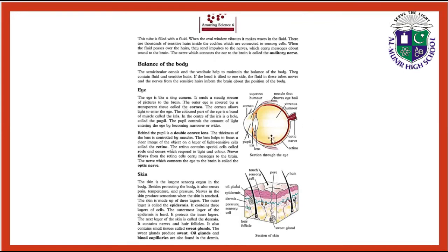The eye is like a tiny camera — it sends a steady stream of pictures to the brain. The outer eye is covered by a transparent tissue called the cornea, which allows light to enter the eye. The colored part of the eye is a band of muscle called the iris. In the center of the iris is a hole called the pupil, which controls the amount of light entering the eye by becoming narrow or wider.